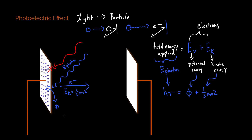That potential energy is what we call the work function. The work function is equal to the potential energy that exists between the electron and the metallic surface — it is an electrostatic interaction and it is a potential energy. So if we wanted to fully quantify this system, we would say that the energy of the photon is equal to the sum of the work function plus the kinetic energy, which is exactly what our formula is saying.